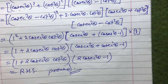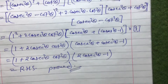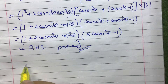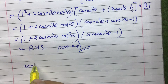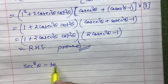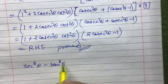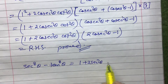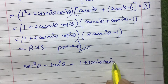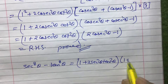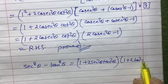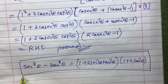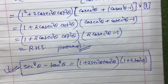Similarly, I will give you one question as homework for practice. The question is: sec⁸θ - tan⁸θ = (1 + 2sec²θ·tan²θ)(1 + 2tan²θ). You can apply the same procedure to solve it. Thank you for watching this video.